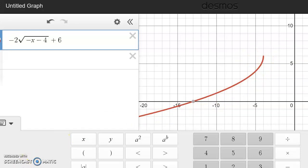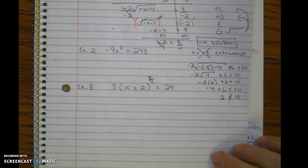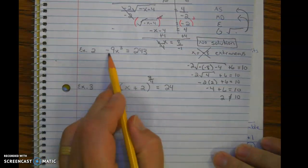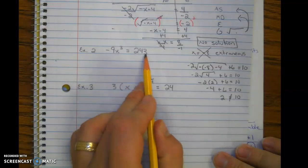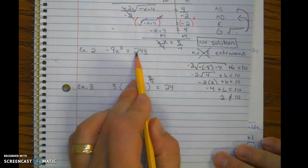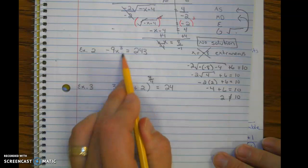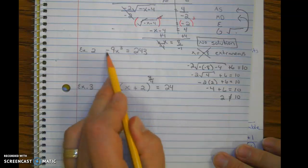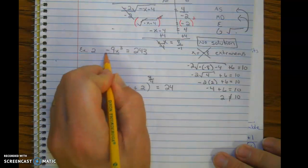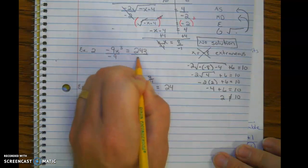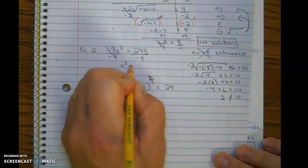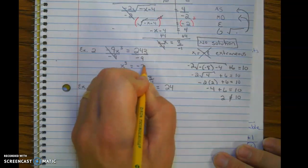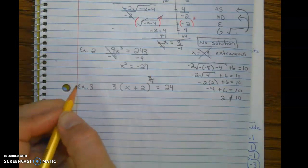Let's take a look at another example. Example 2. Here we have negative 9x cubed equals 243. So again, when you're solving, we just work GEMDAS backwards. So undo adding and subtracting, none of that. Multiplying and dividing. So we're going to start by dividing by the negative 9. Negative 27.